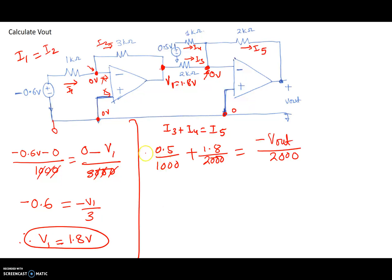So what I'll get is 2,000 times 0.5 divided by 1,000 is 2 times 0.5, so 1, plus 1.8 times 2,000 divided by 2,000 is 1.8, and minus V out over 2,000 times 2,000 equals minus V out. So in other words, V out equals minus 2.8 volts. So this V out is equal to minus 2.8 volts.